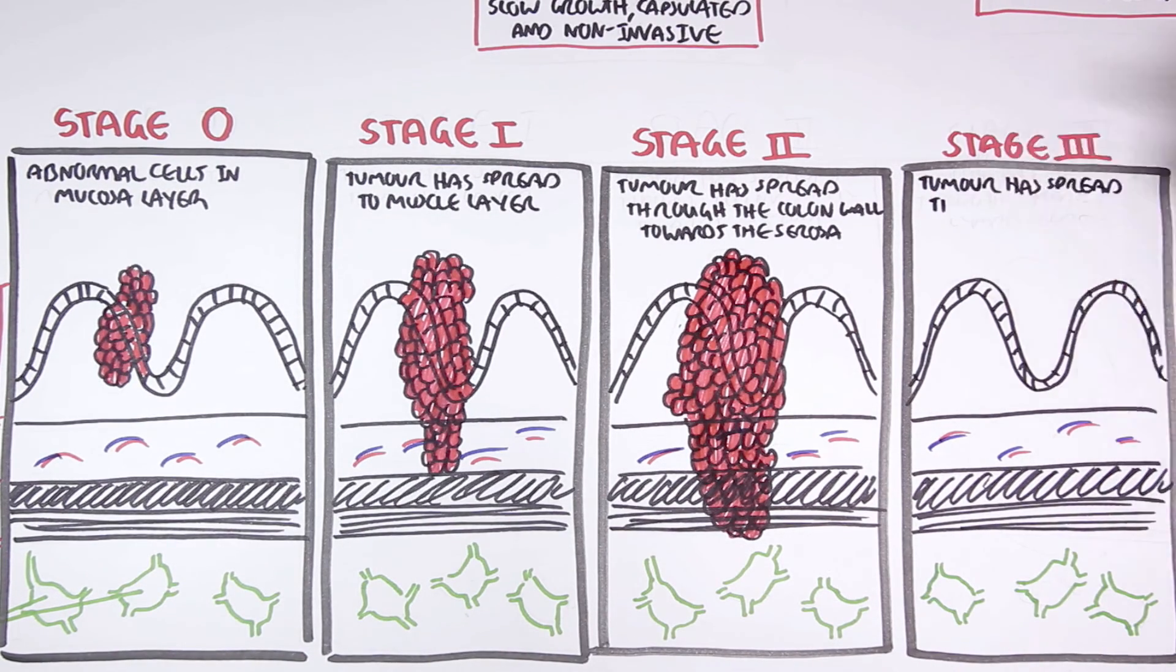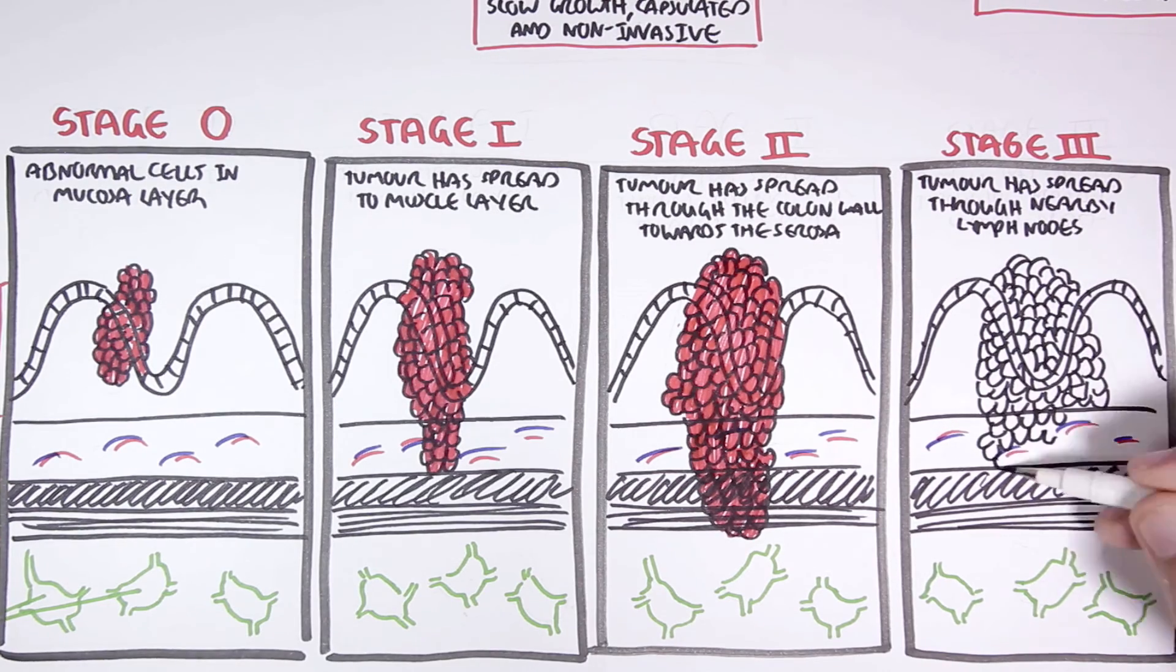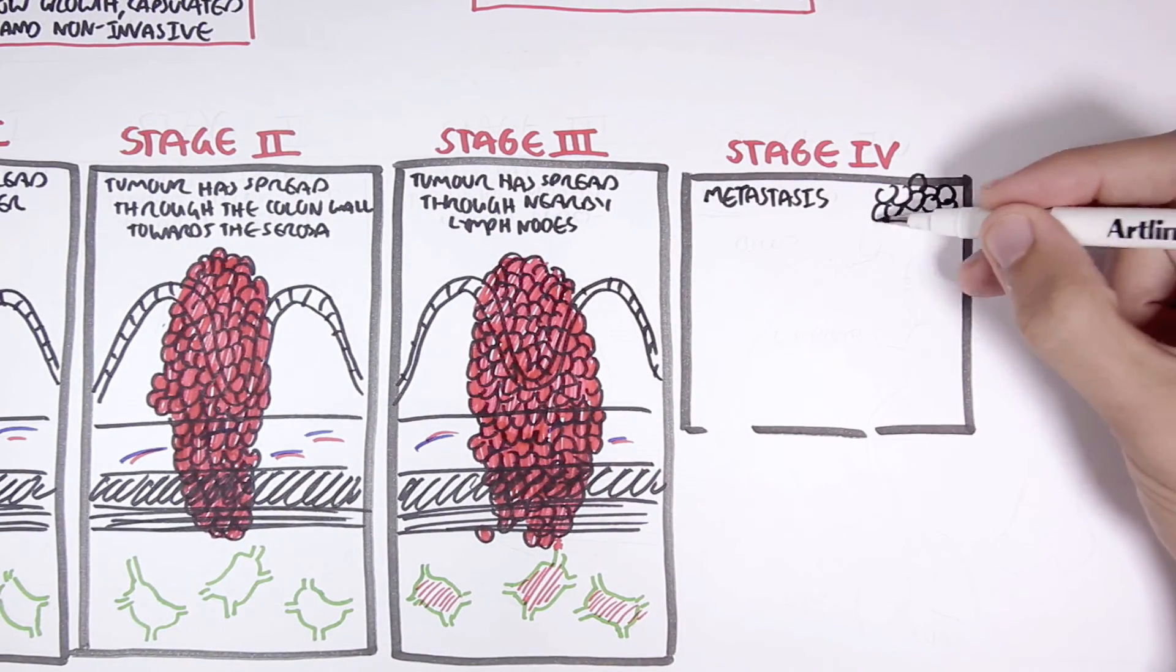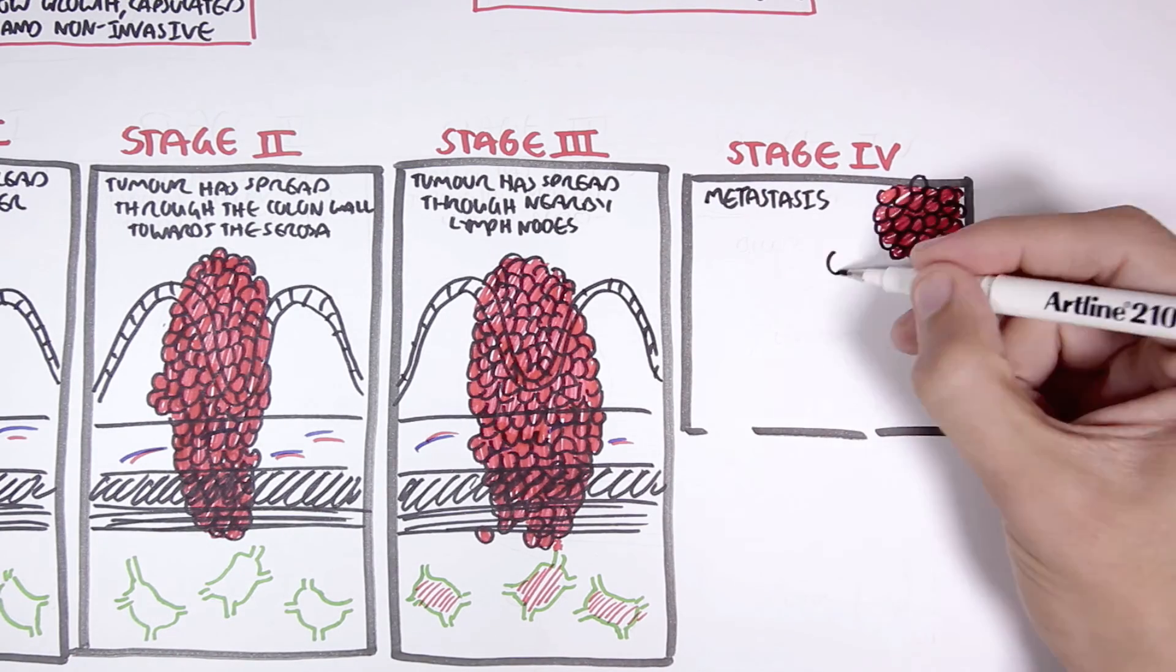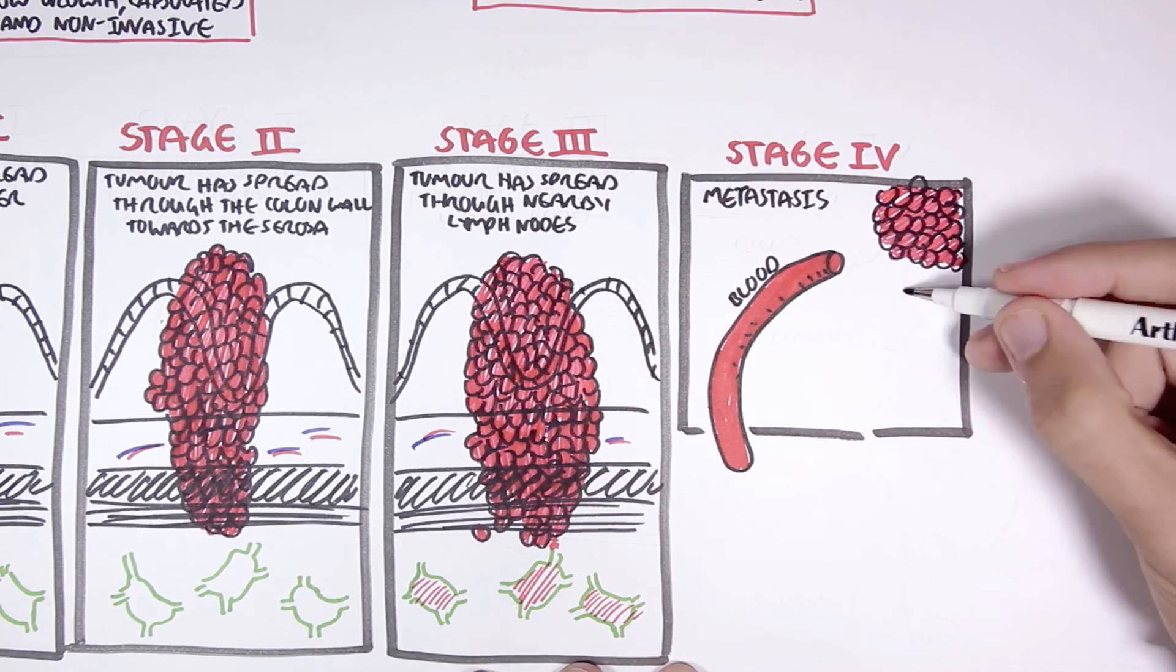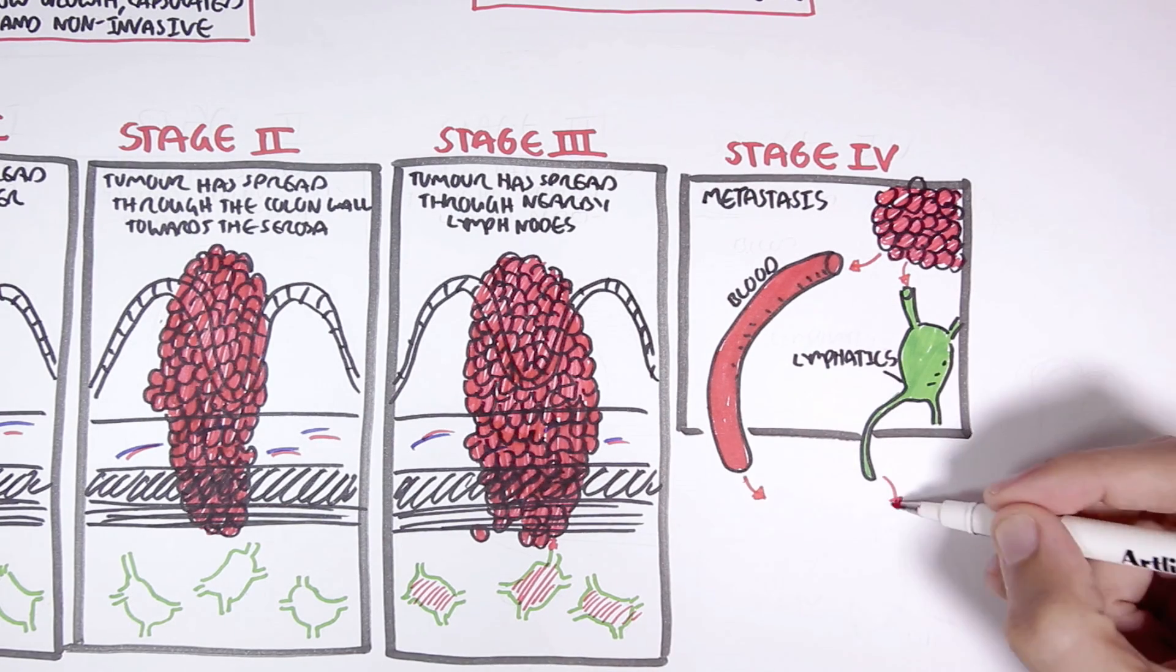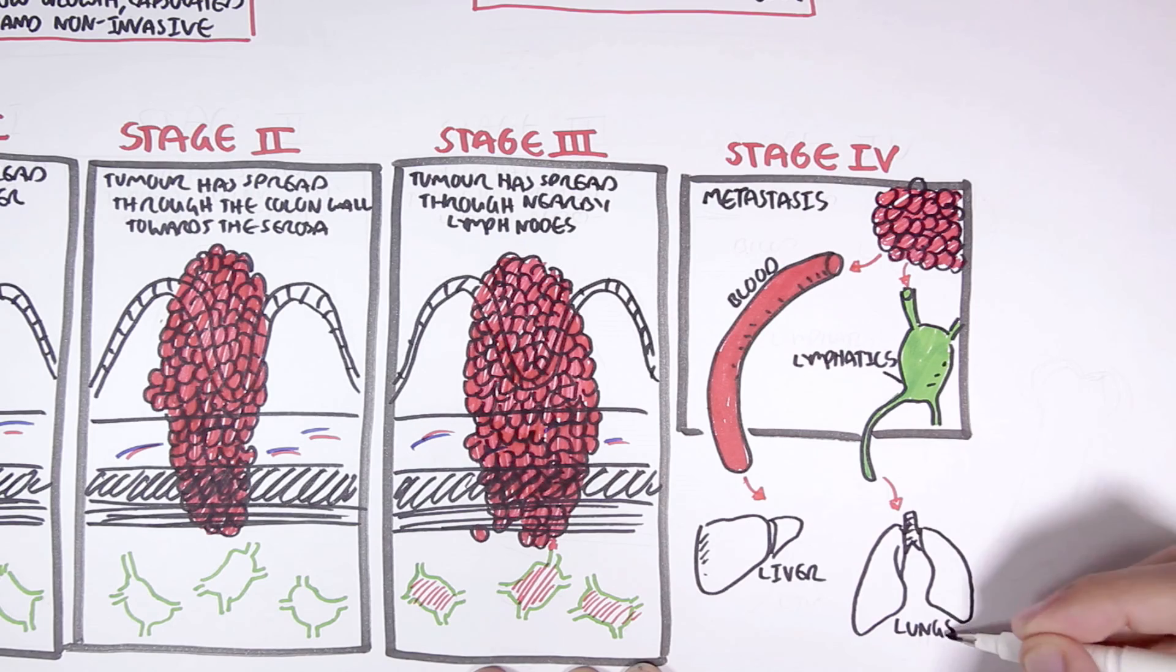Stage 3, the tumor has spread through nearby lymph nodes. And then we have stage 4, which is the terminal stage, called metastasis. This is where the cancer cells have metastasized and have begun invading other tissues and organs by traveling through the blood and lymphatics. The cancer cells can invade other organs such as the liver, lungs, and bone.